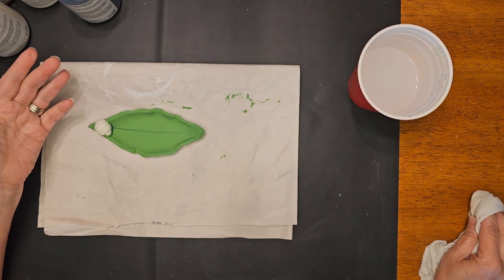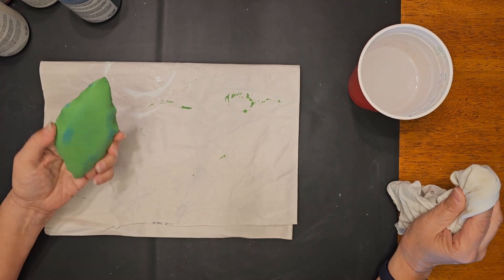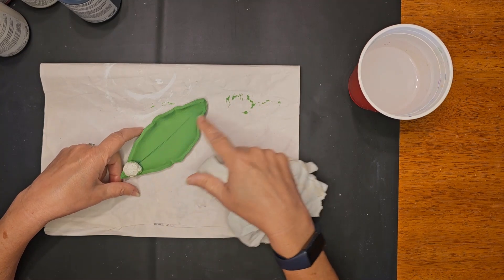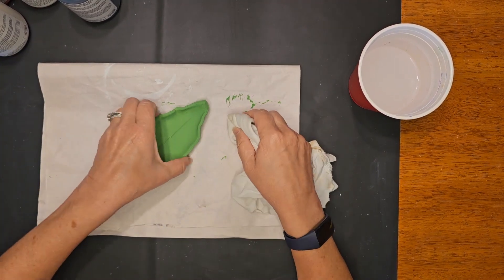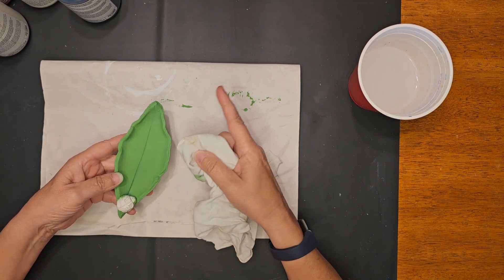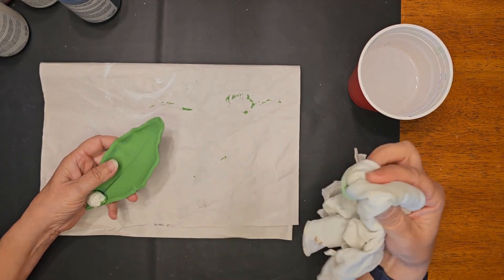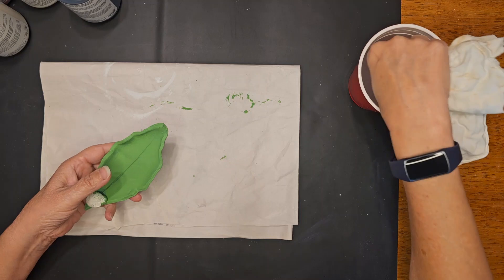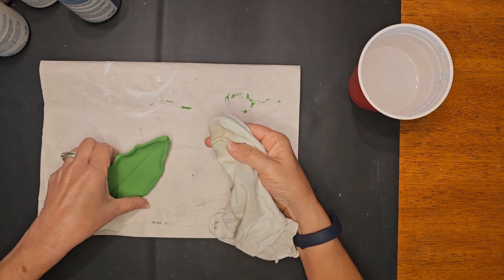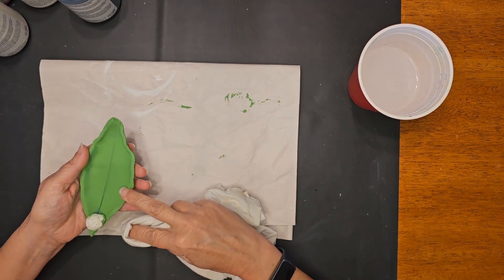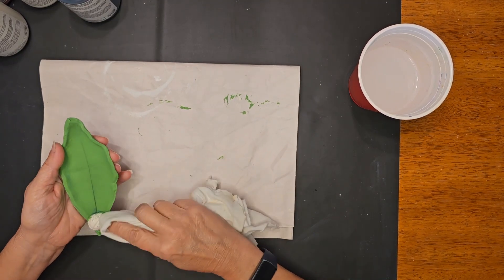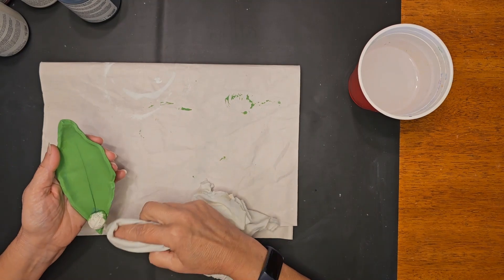Before we start working on our ladybug, we are going to take a little bit of water, and we are just going to rub off some of this chalk paint to bring out those layers of paint. We will let that dry and then continue. I've got a little wet rag, old t-shirts, and I am just going to hit these highlighted spots.